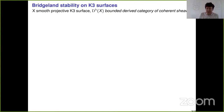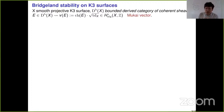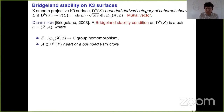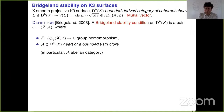Let me summarize the definition specifically in the case of a smooth projective K3 surface. For numerical invariants, instead of just looking at rank and degree, we use the Mukai vector, which is a small twist of the Chern character. A stability condition is a pair (Z, A), where Z is a group homomorphism to the complex plane and A is the heart of a bounded t-structure — a full abelian subcategory of the derived category. These two together should mimic the formal properties of slope stability on curves as closely as possible.